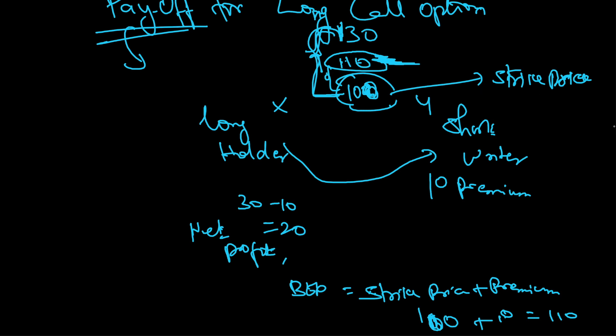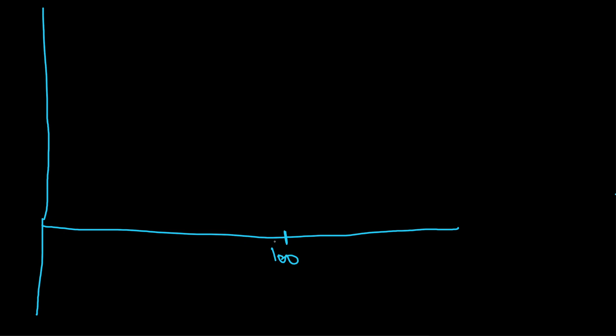Now let me show all this graphically. I'll draw a graph where the x-axis is price and the y-axis is profit and loss. This is zero — above zero are profits, below are losses.